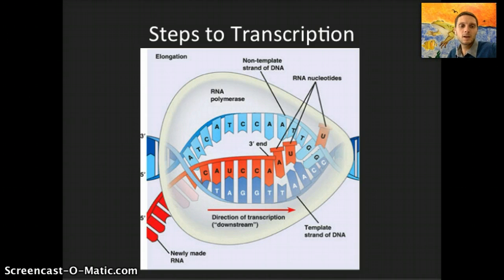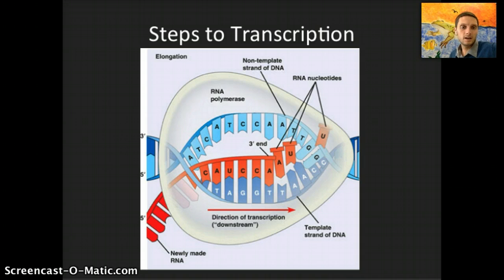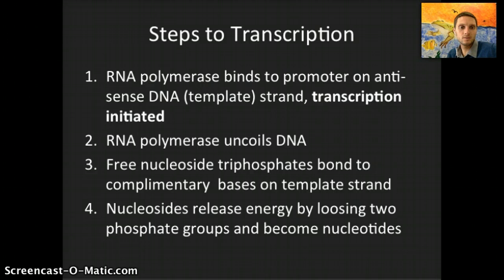This process continues moving in a five-prime to three-prime direction until the RNA polymerase reaches a terminator region — essentially a stop point in the DNA. The RNA polymerase releases the messenger RNA that has been made; in a eukaryotic cell, the introns are removed, and then the double helix reforms and the DNA recoils. There are steps outlined on the next slides if you'd like to pause the video to write them down.